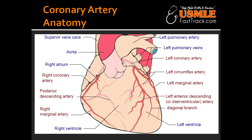What does left dominant circulation mean? Left dominant circulation means that in about 8% of cases, the posterior descending artery arises from the left circumflex coronary artery. What does codominant circulation mean? Codominant circulation means that in about 7% of patients, the posterior descending artery arises from both the left circumflex coronary artery and the right coronary artery.